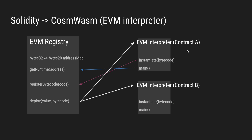Each time contract A is called, its main or execute function retrieves the bytecode from the EVM registry and interprets it with the given call data. And this is how the EVM registry can deploy multiple contracts based on the same code ID of the interpreter.